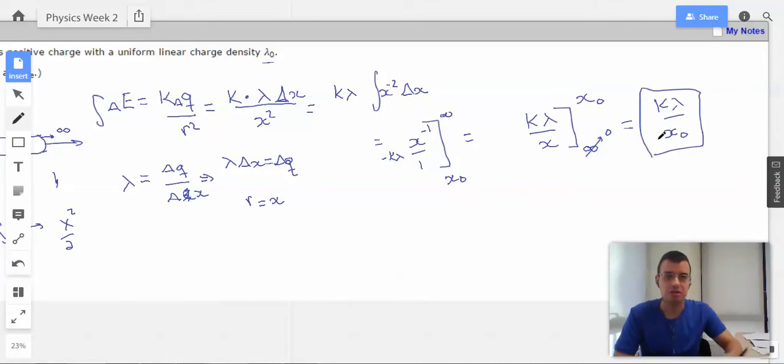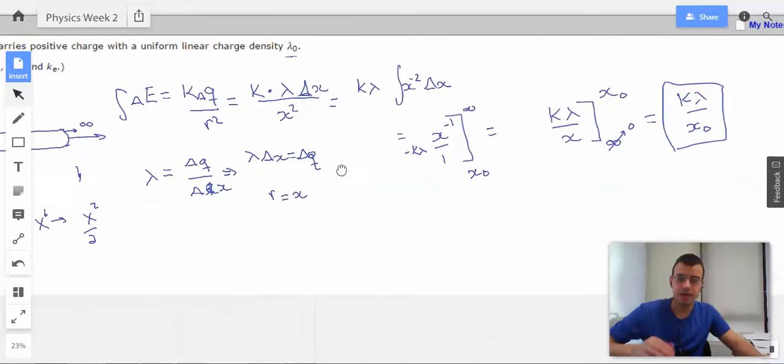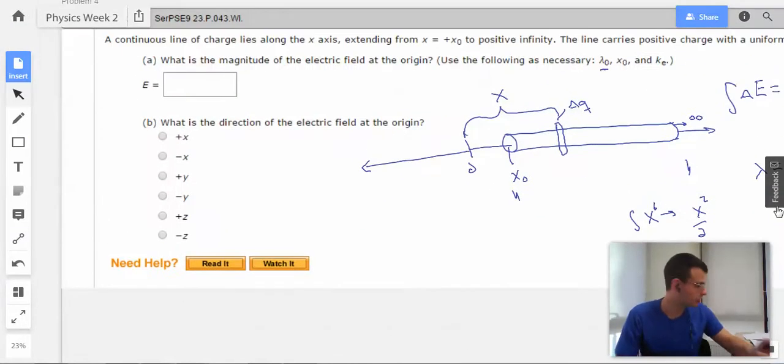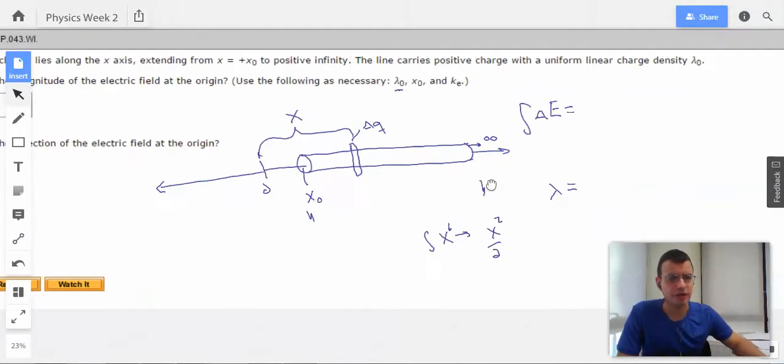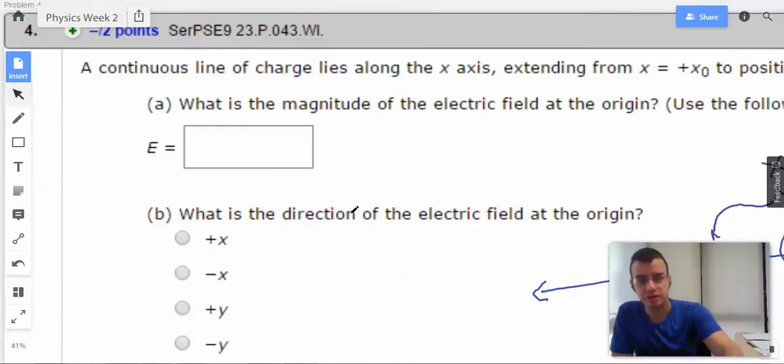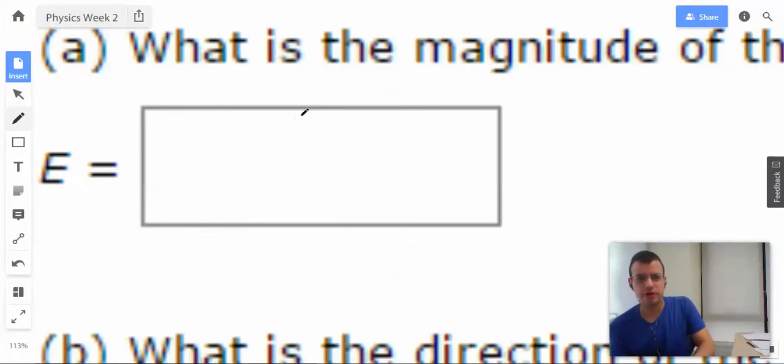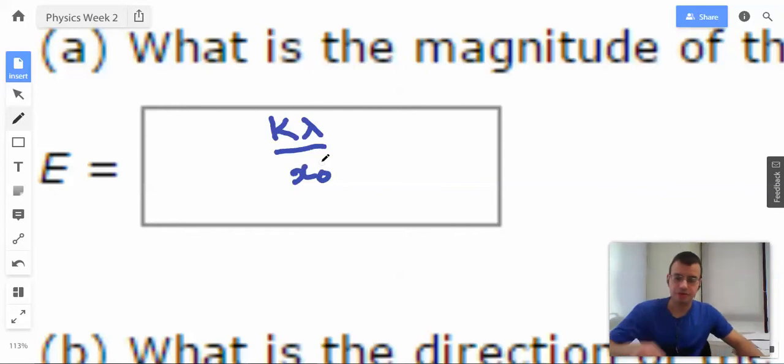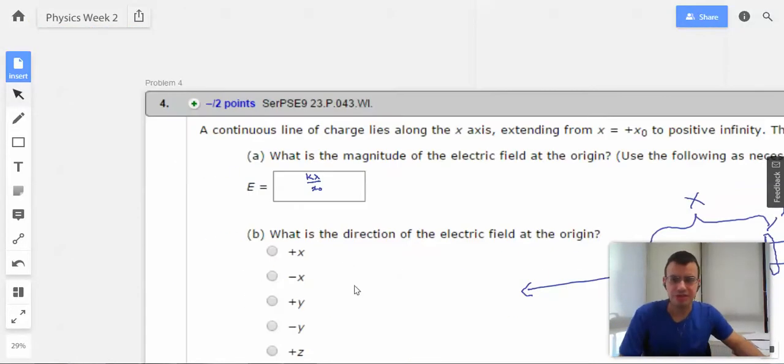And that is going to be the magnitude of the electric field. I think that's going to be the magnitude of the electric field. Yes. I'm quite confident. K lambda over x naught. That probably even looks reasonably written.